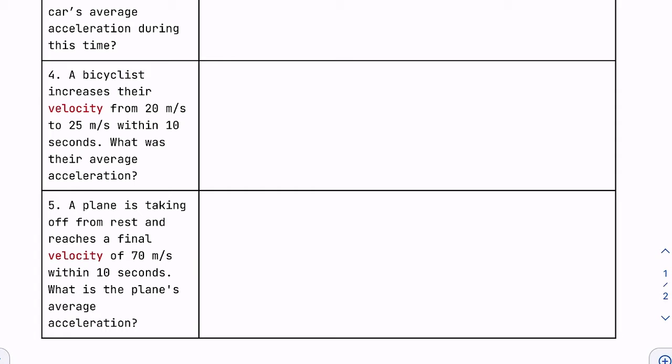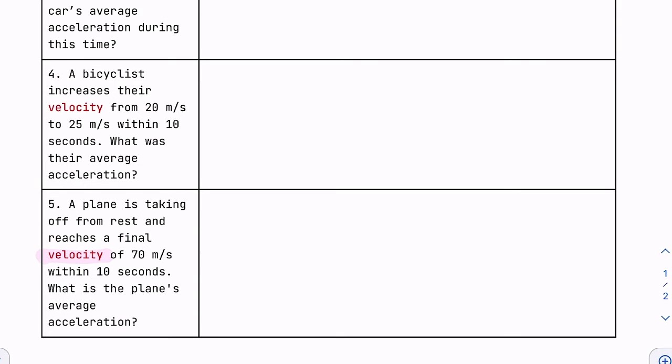Alright, I'll also do number 5. A plane is taking off from rest and reaches the final velocity of 70 meters per second within 10 seconds. What is the plane's average acceleration? I think on your paper it says speed. Technically it wouldn't matter, but when we're first learning it gets a little confusing. So if you could please change it to velocity, that would be great. Same thing with number 4.